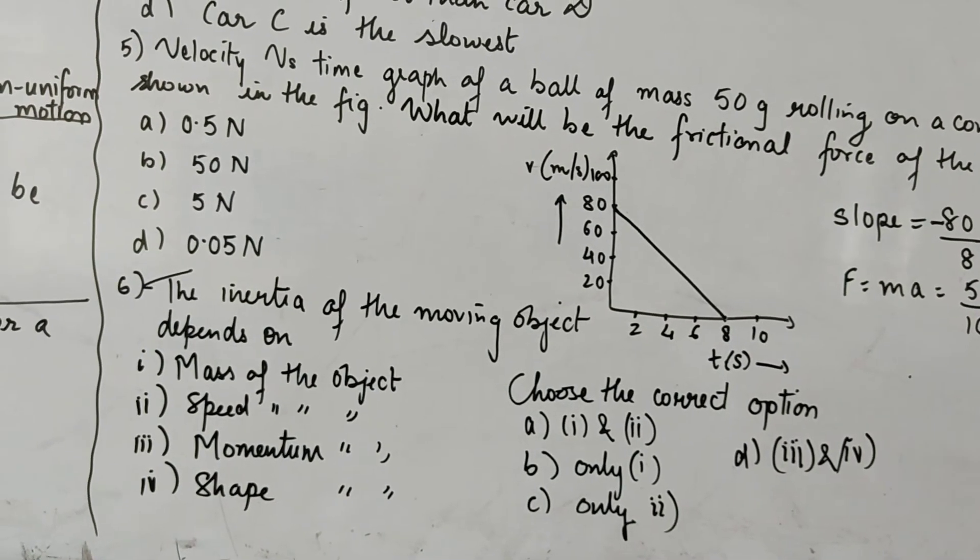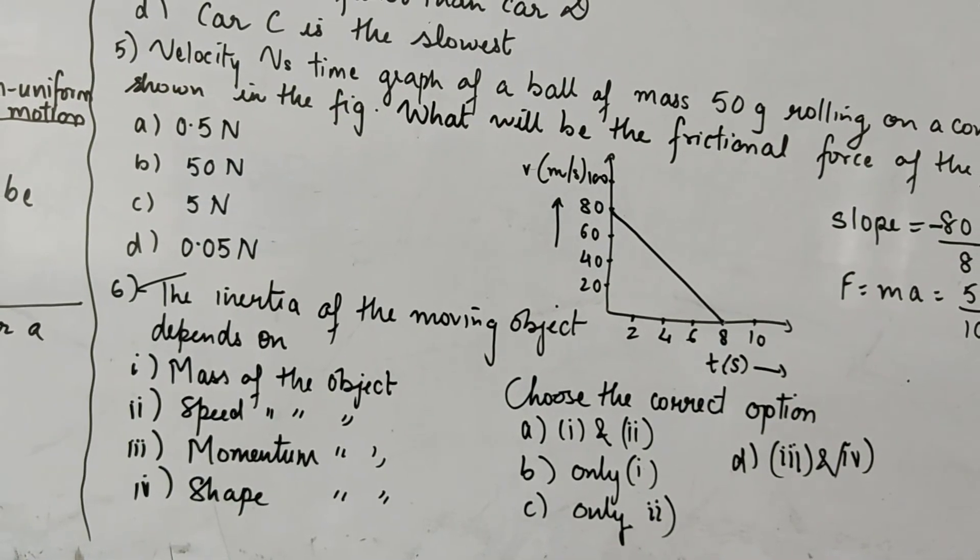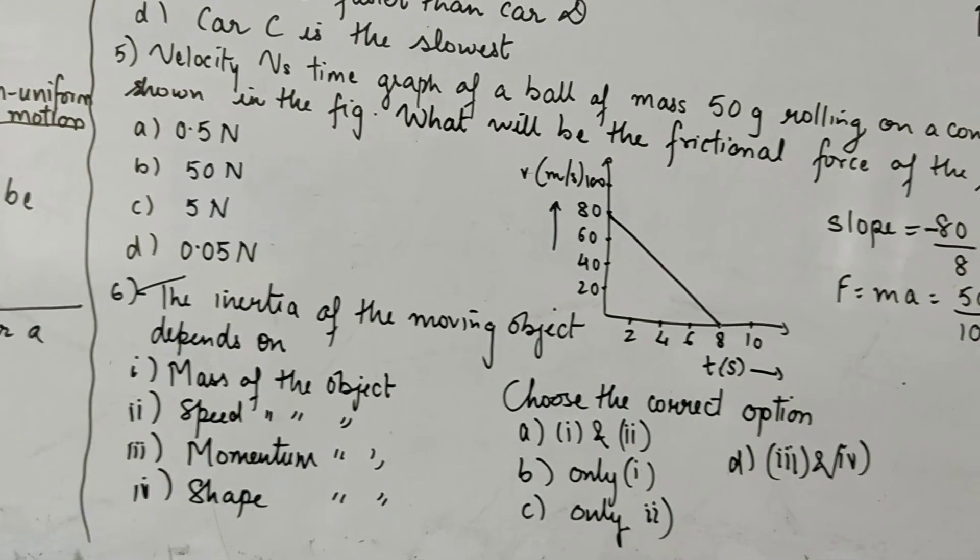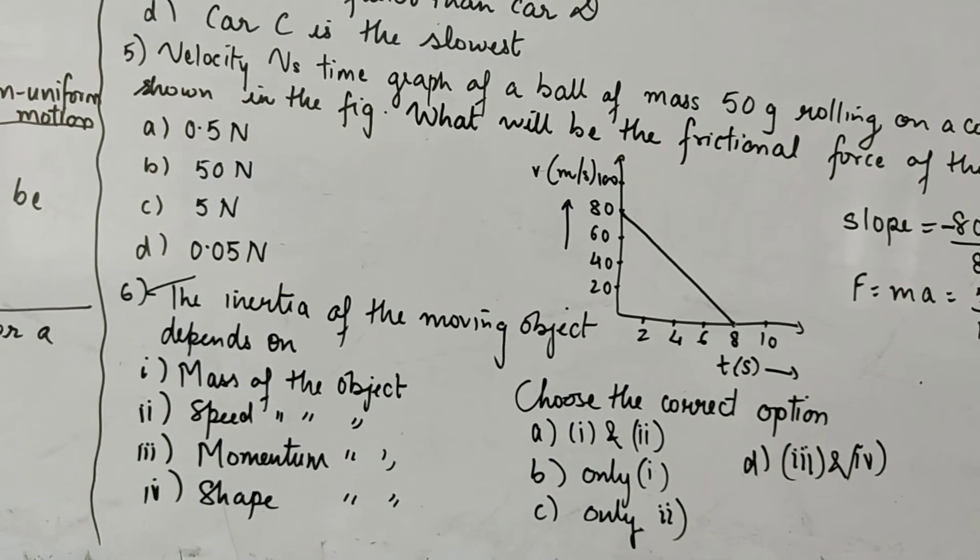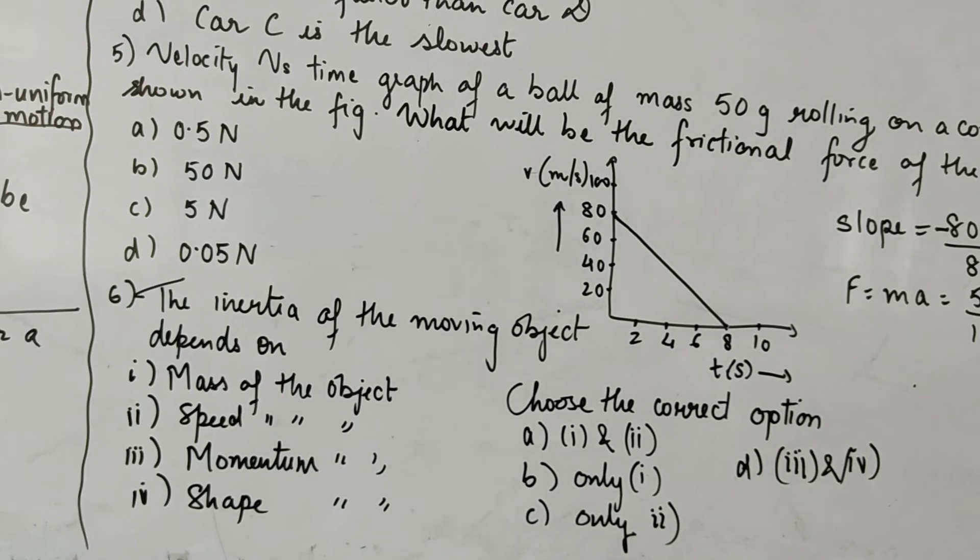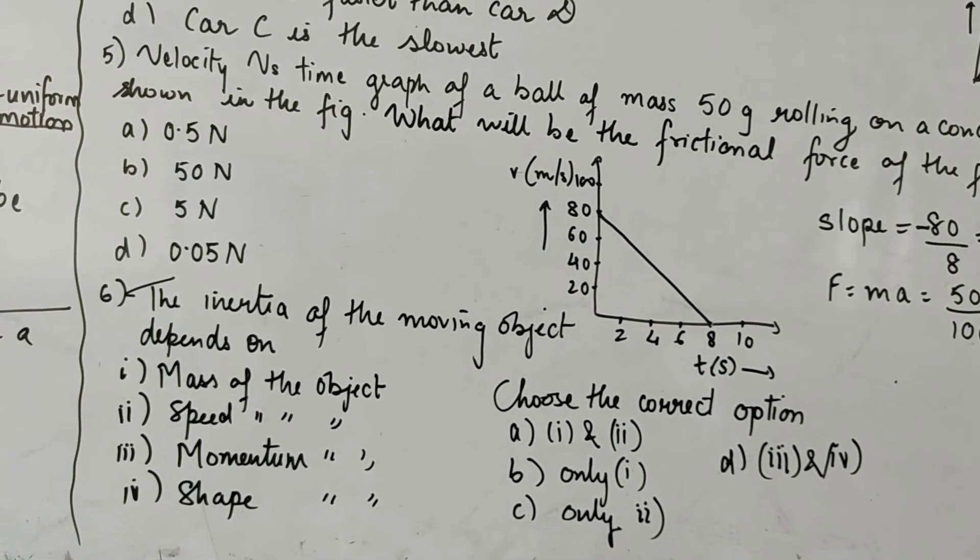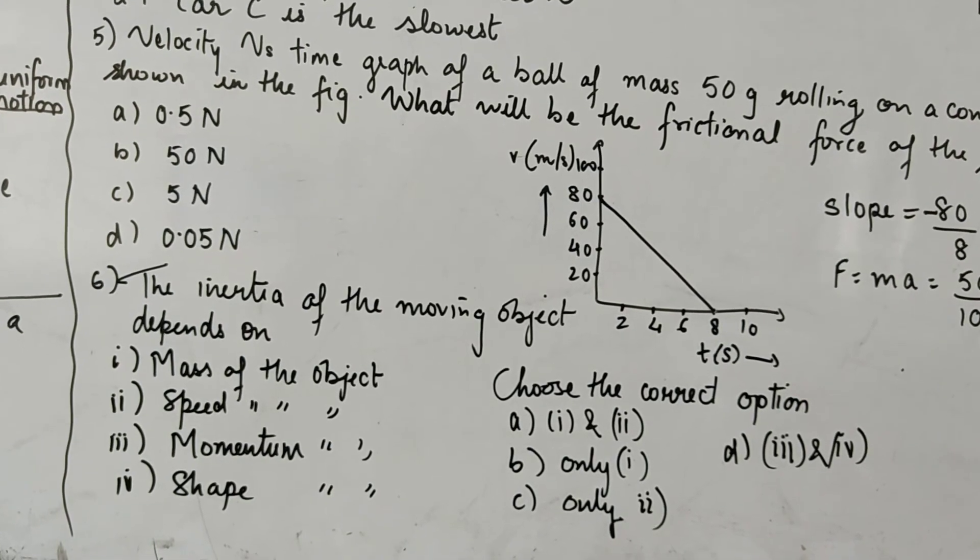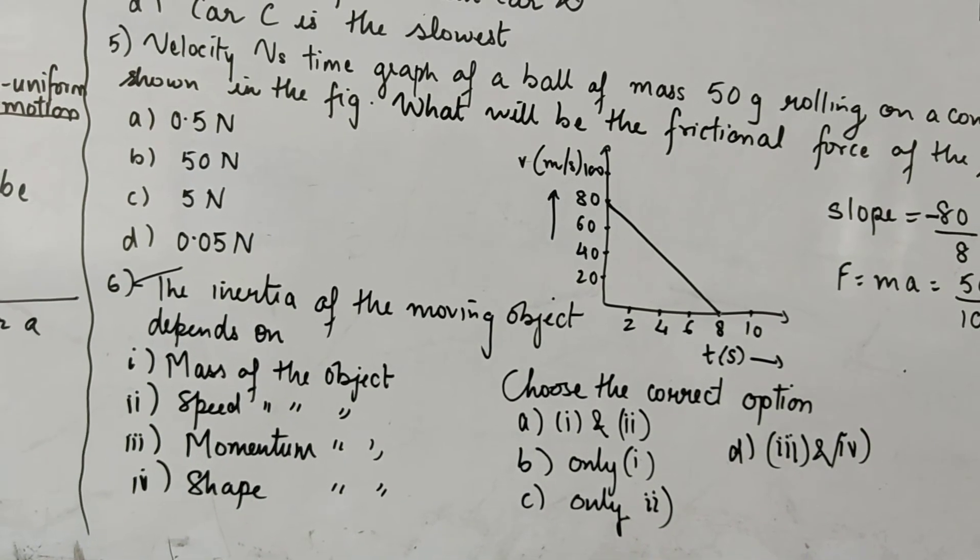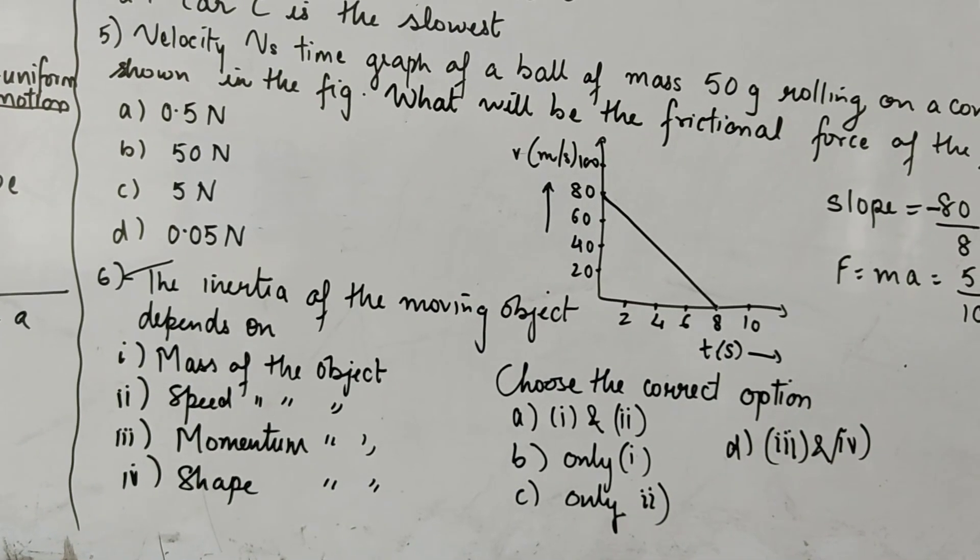It only depends upon mass of the object. Remember, inertia depends upon only mass of the object. So out of these four options A, B, C, D, B is the option which has only 1. Only 1 means inertia depends only on mass. So B is the correct option here.